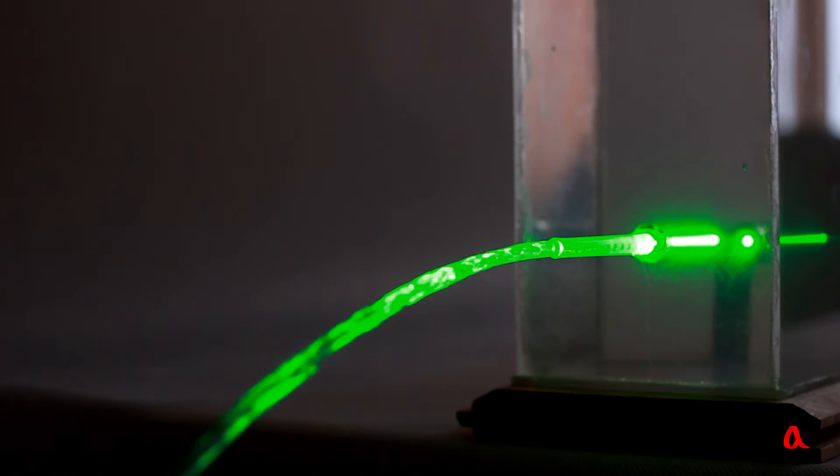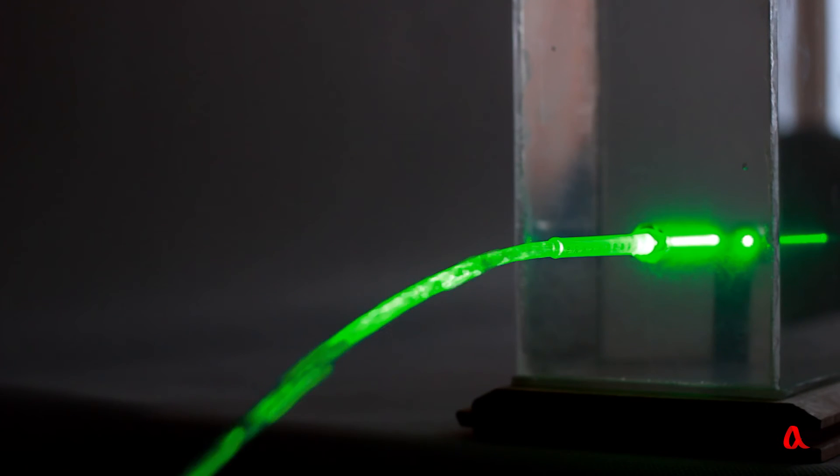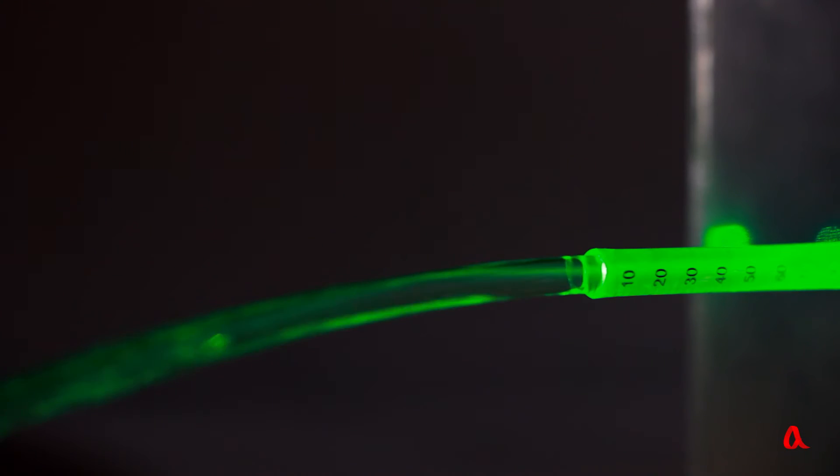A jet of water coming out of the tube is curved downwards and so is the laser beam. Have we managed to bend it? Of course not. It's just that the beam falls from within the tube onto the surface of the jet at a narrow angle and that's why it undergoes total internal reflection. This happens many times until the jet starts to split into drops.